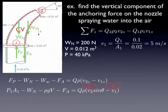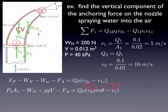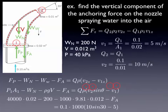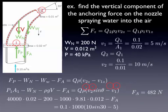Now we have to come up with some numbers to put in our equation. We need the velocity, which is Q over A — we can calculate that. Since the flow rates are the same, the other velocity is also Q over A, and we can calculate that. Now we've got all of our numbers. We plug in all those numbers and solve for the anchoring force. That gives us a positive 482 newtons, so it's positive, meaning that I drew it correctly and the force is acting downwards.